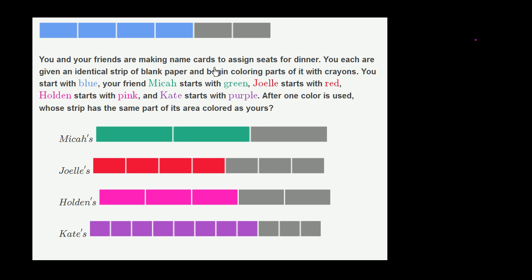You and your friends are making name cards to assign seats for dinner. You each are given an identical strip of blank paper and begin coloring parts of it with crayons.